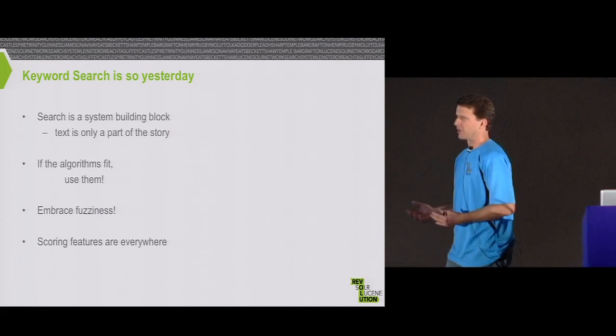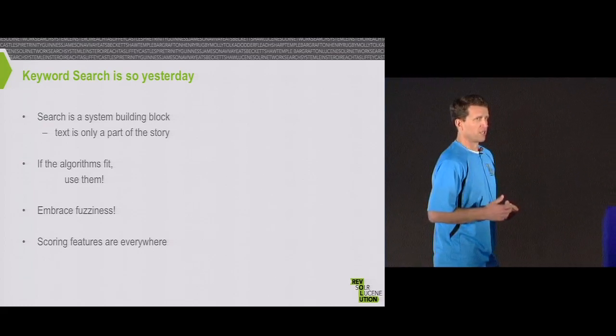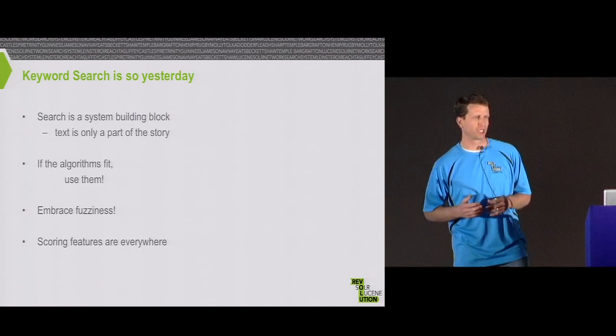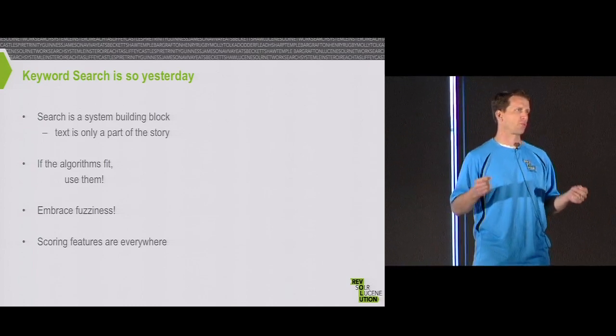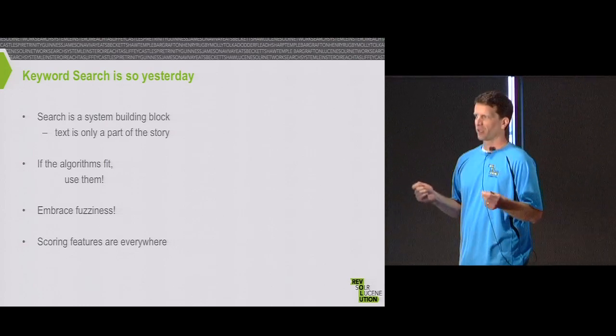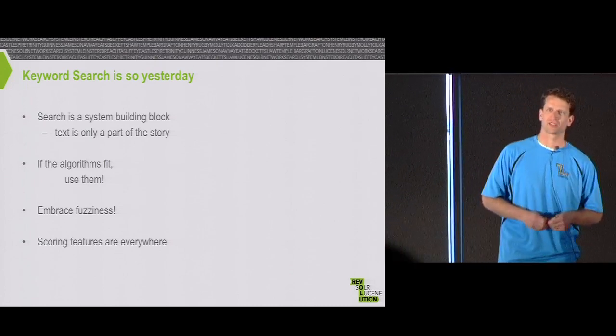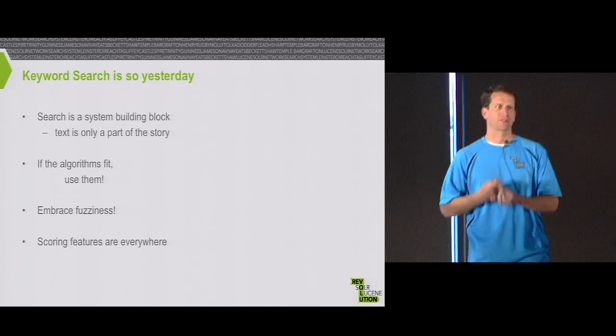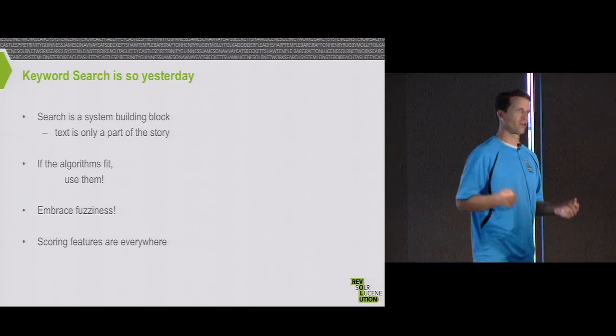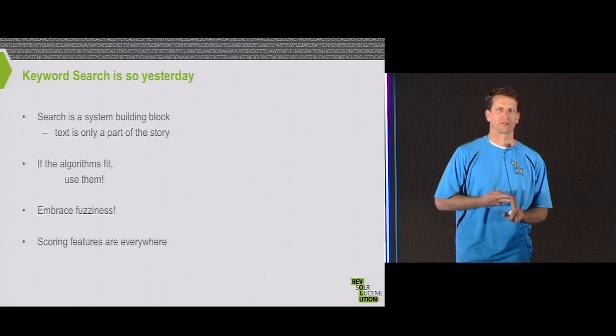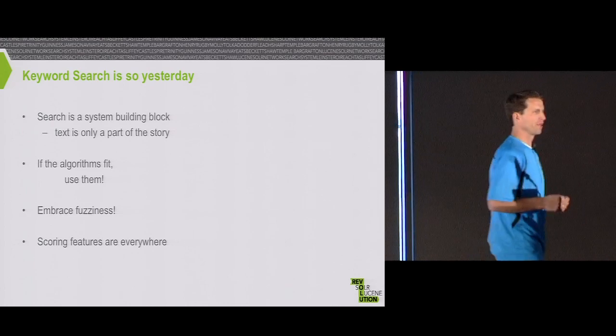My first tenant around this is that Lucene and Solr have made keyword search a commodity. It's very yesterday to just be doing keyword search. So I want you to think about search as being a system building block. It's only a part of the story. If the algorithms fit, use them. Embrace fuzziness, and scoring features are everywhere.